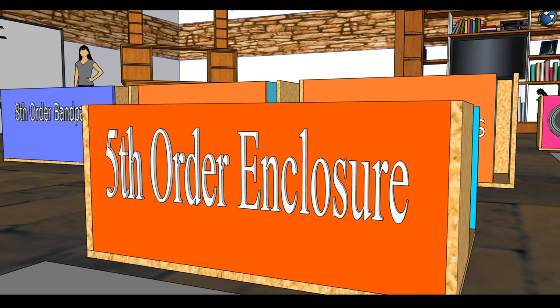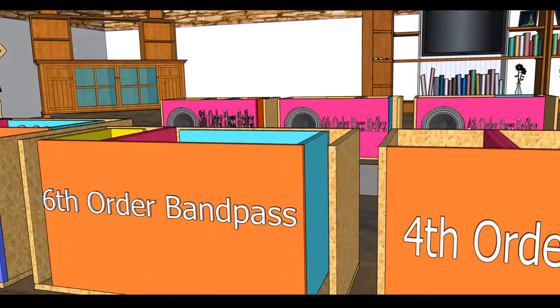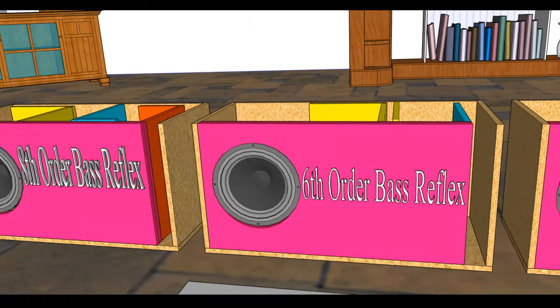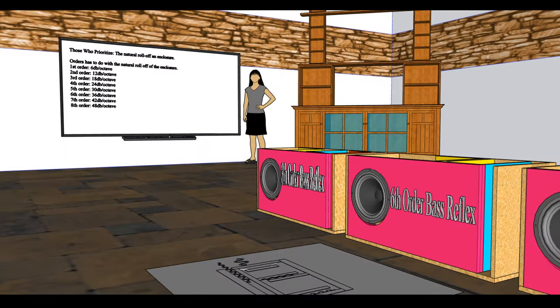What is up family, it's the Budget Basehead, welcome back to the channel. Right now what you guys are looking at is the last thing that we talked about in this series, which was the fifth order enclosures. For right now what we're going to be doing, we're going to be moving on to sixth order base reflex, but before we do that I like to do a little bit of a refresher to let you guys know exactly how it is that we're coming up with our methods of counting orders.